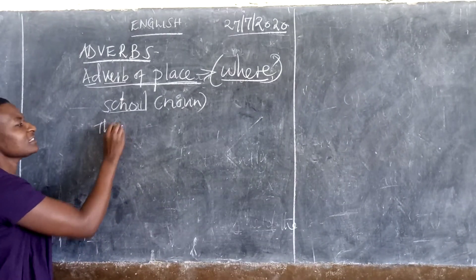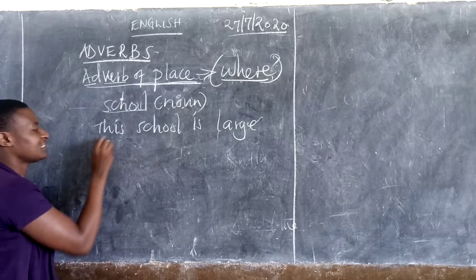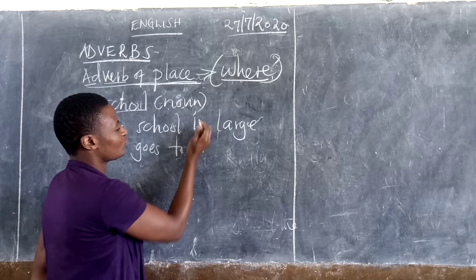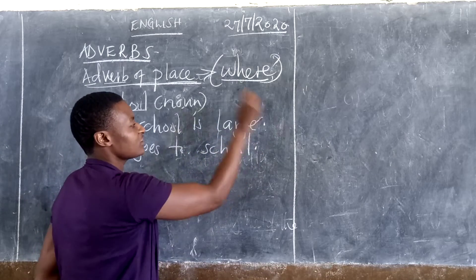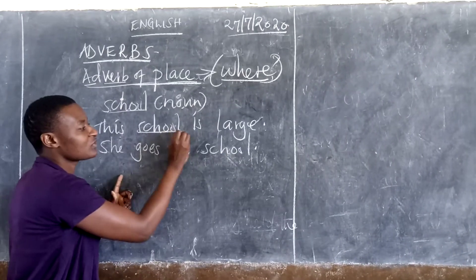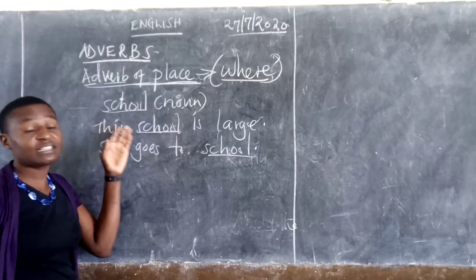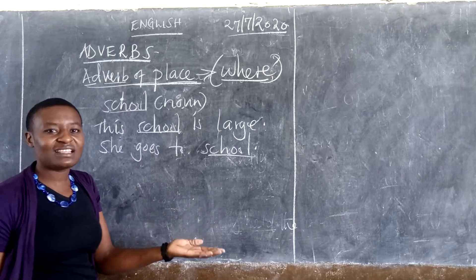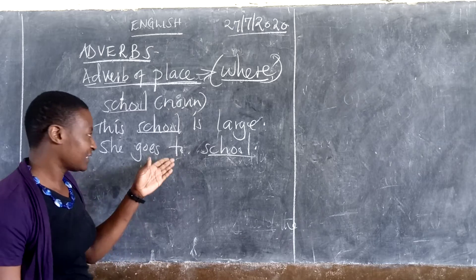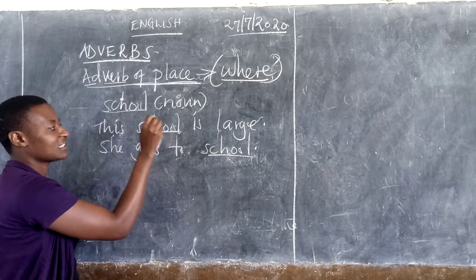For example, this school is large. And she goes to school. These sentences are different. I'm talking about in terms of the word school. I know you know that school is a noun. But the same word school, when you use in a sentence differently, it brings out the meaning of, or it brings out that image of being a place. For example, this school, we are talking about this place. So, this one is a what? A noun. A noun is a name of a person, place, or thing.